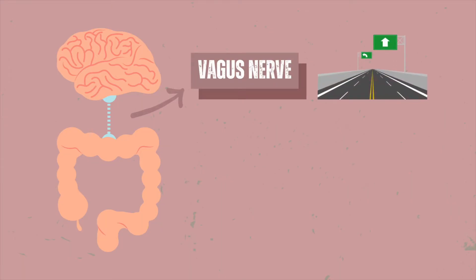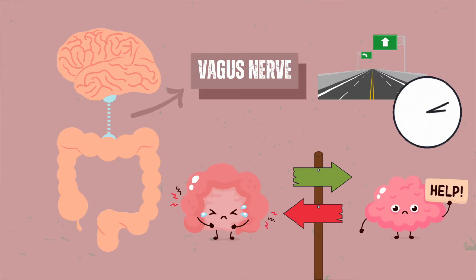This communication between the gut and the brain is possible through the vagus nerve, a bi-directional information highway between the gut and the brain that transmits messages in milliseconds. It's a two-way street. A troubled intestine can signal distress to the brain, just as a troubled brain can influence gut function.